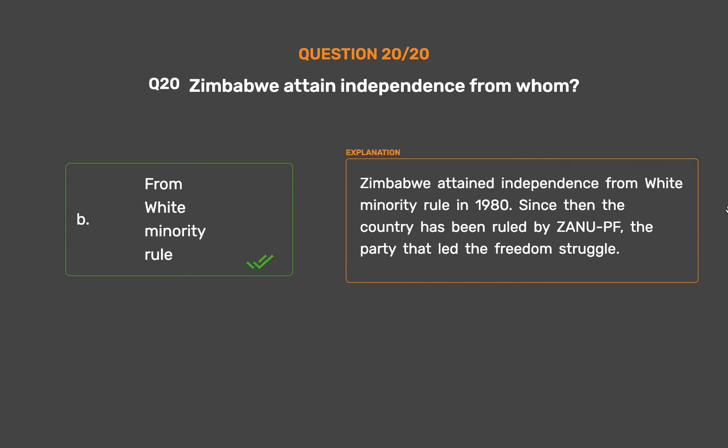Zimbabwe attained independence from white minority rule in 1980. Since then the country has been ruled by ZANU-PF, the party that led the freedom struggle.